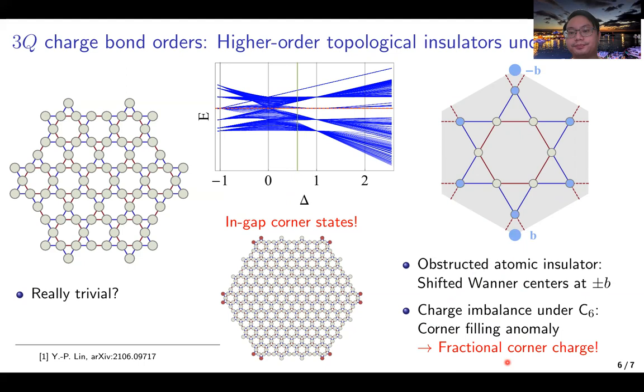In summary, we have found rich phenomena in the charge density waves at Van Hove singularity on hexagonal lattices. Given the Haldane model phase diagram and the higher-order topological insulator, we expect more to be explored in the charge density waves. This is the end of my talk, and thank you for your listening.